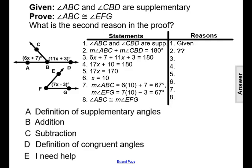Given the information that angle ABC and angle CBD are supplementary, and that we're trying to prove angle ABC is congruent to angle EFG, we now want to know what is the second reason in the proof.